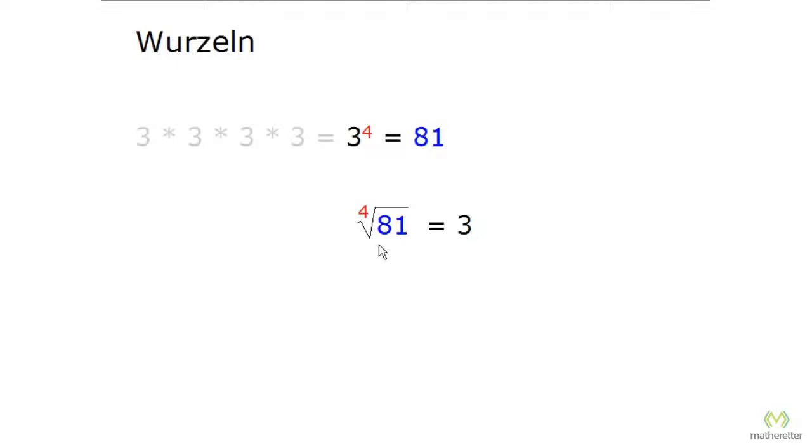A short word on the terms. This number in front on the root sign is called the root exponent. For powers we said exponent, here it's the root exponent. The part down here, which was the power value, is called the radicand. This is the root sign, and the result is called the root value, which gives us the base of the power.